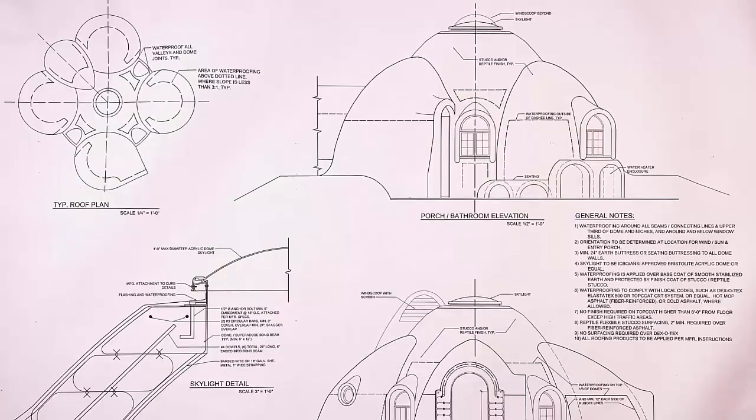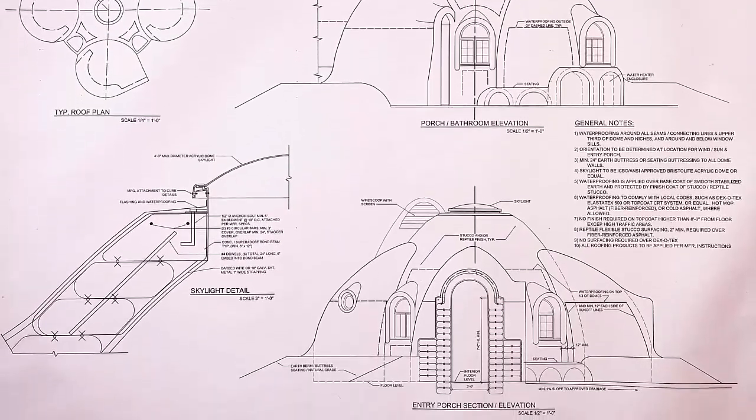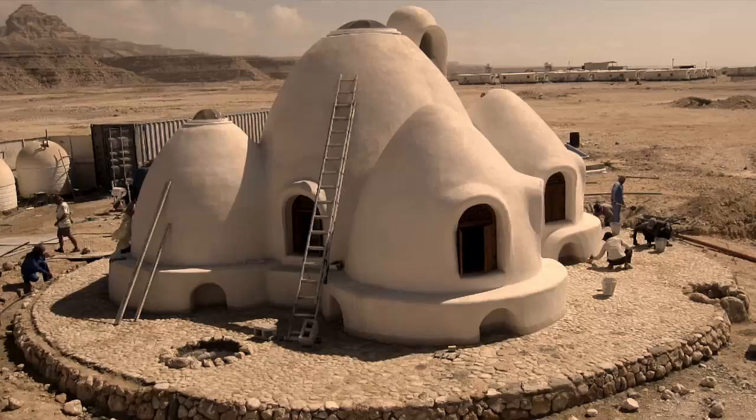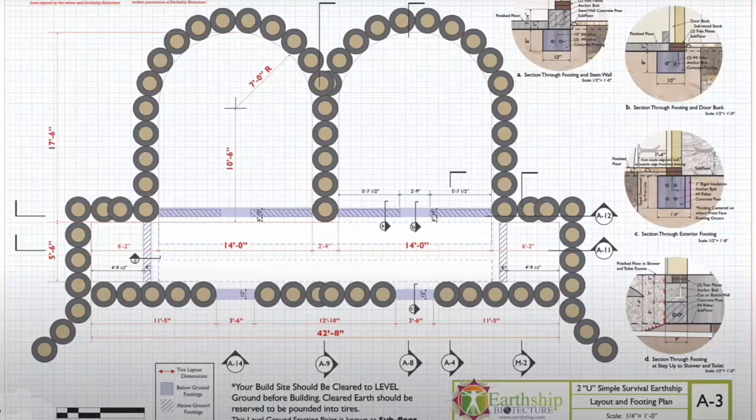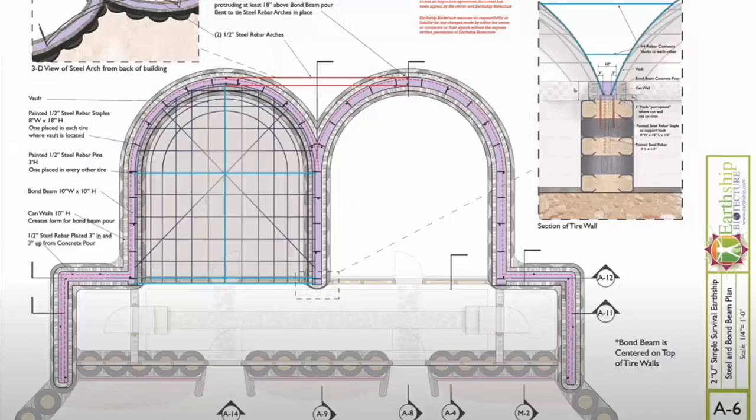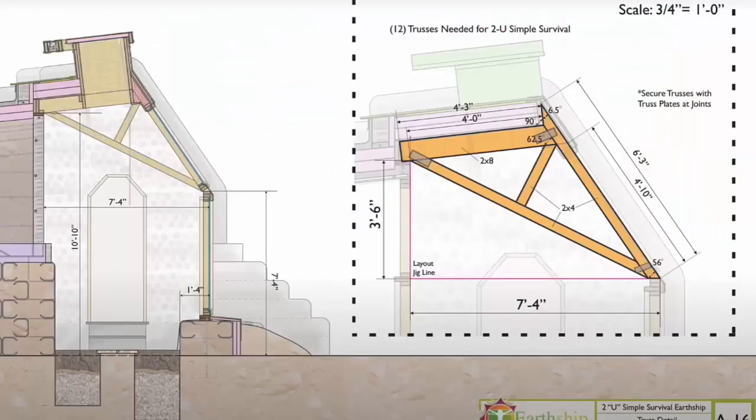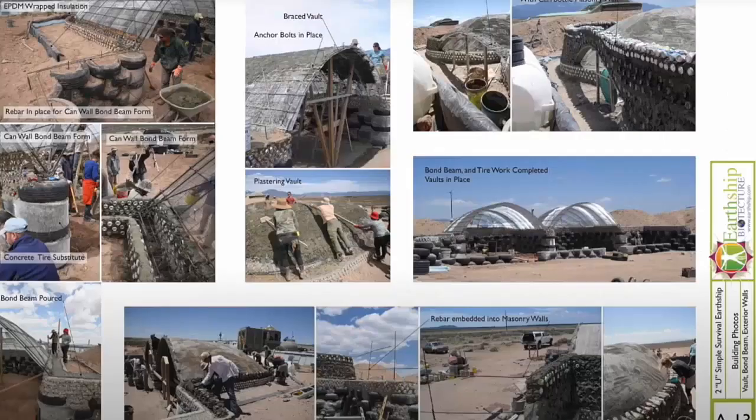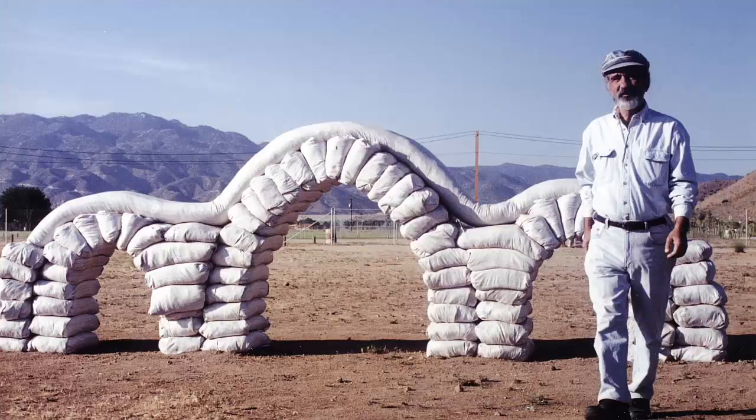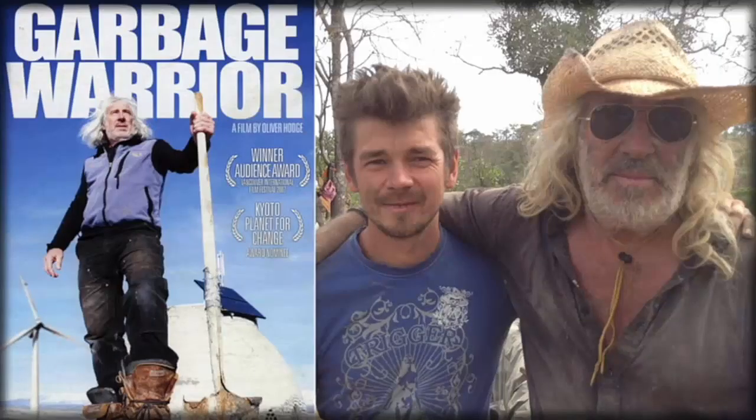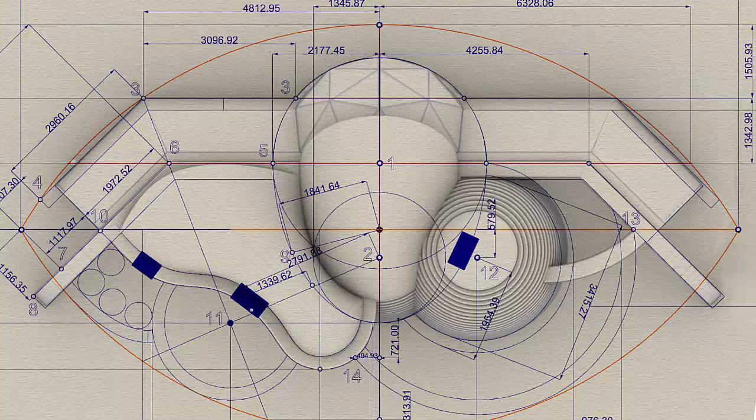On one of the lessons we'll go through the detailed Moon Cocoon Cal Earth blueprint. In another lesson we'll cover the detailed blueprint of the Earthship Simple Survival Model so you learn how the master architects such as Nader Khalili and Mike Reynolds present their blueprints to the authorities.